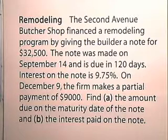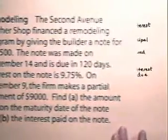Find A, the amount due on the maturity date of the note, and B, the interest paid on the note. Now, let's use the United States Rule.